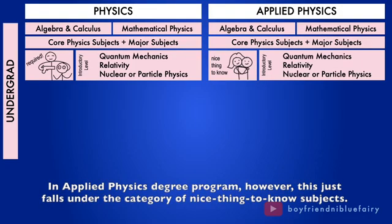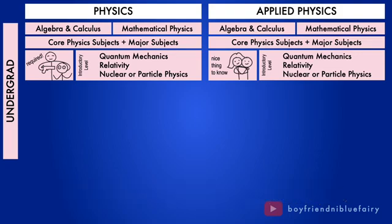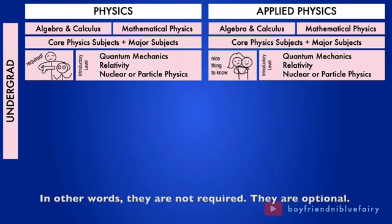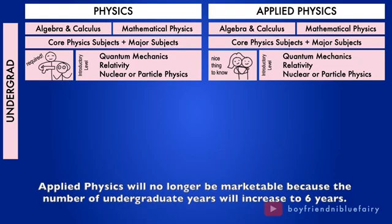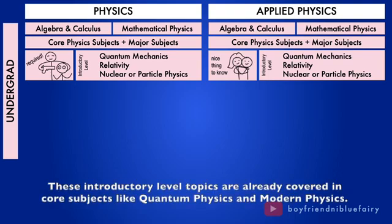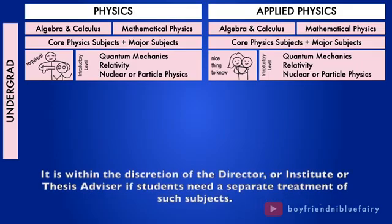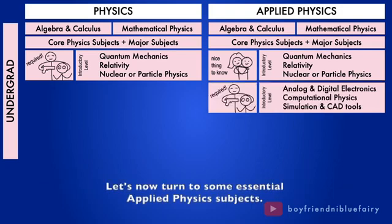In applied physics degree program, however, these just falls under the category of nice-to-know subjects. In other words, they are not required. They are optional. One of the practical reasons is that if these subjects are forced in the curriculum, applied physics will no longer be marketable because the number of undergraduate years will increase to six years. These introductory level topics are already covered in core subjects like quantum physics and modern physics. It is within the discretion of the director or institute or thesis advisor if students need separate treatment of such subjects.